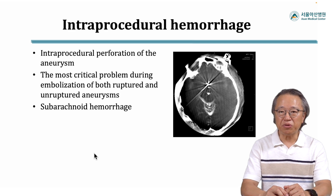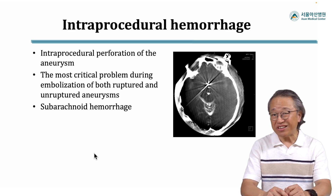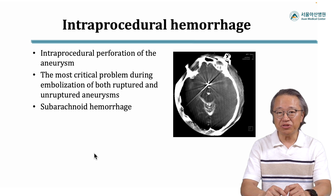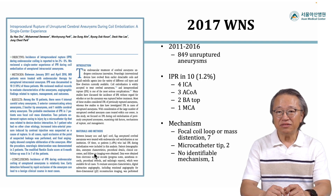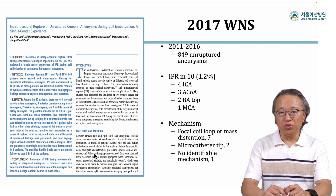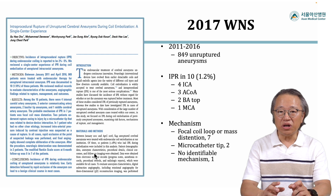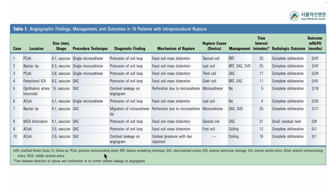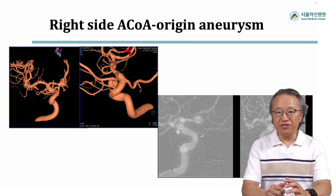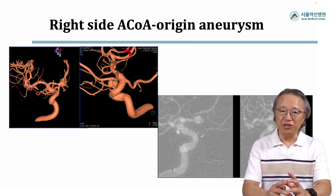How about intra-procedural hemorrhage, primarily due to perforation of the aneurysm? This is the most critical problem in embolization procedures. According to our previous data, it was about 1.2 percent across various series. It was primarily due to coil loop perforation or coil mass distension of the aneurysm. Fortunately, there were no fatalities, even though several cases became symptomatic neurologically, and most of them showed relatively good outcome in the long run.